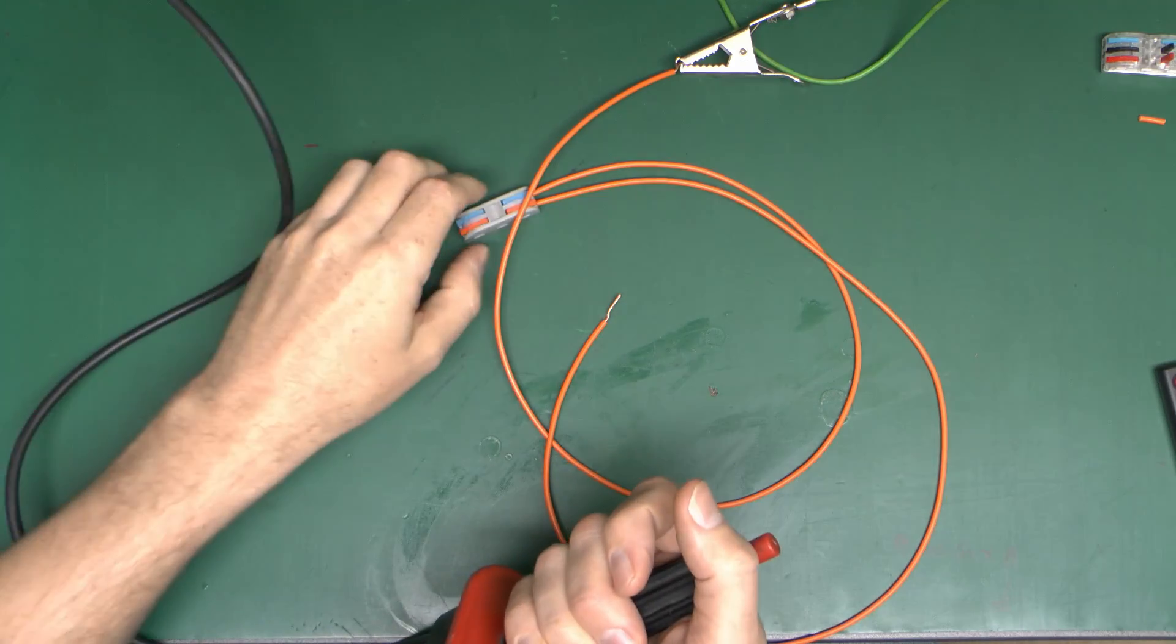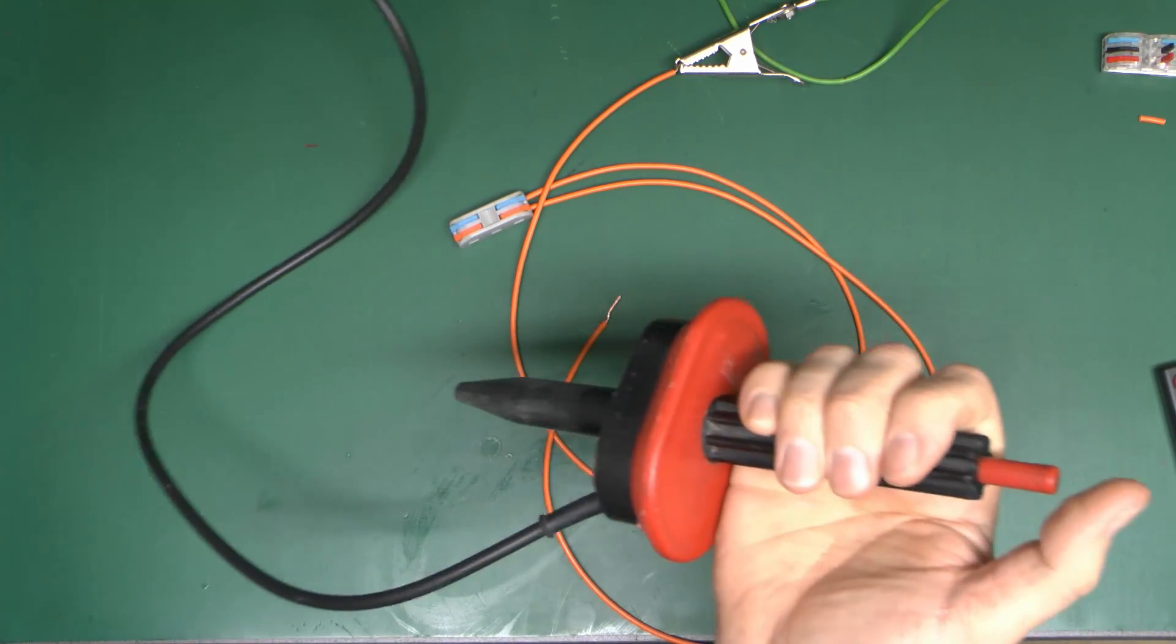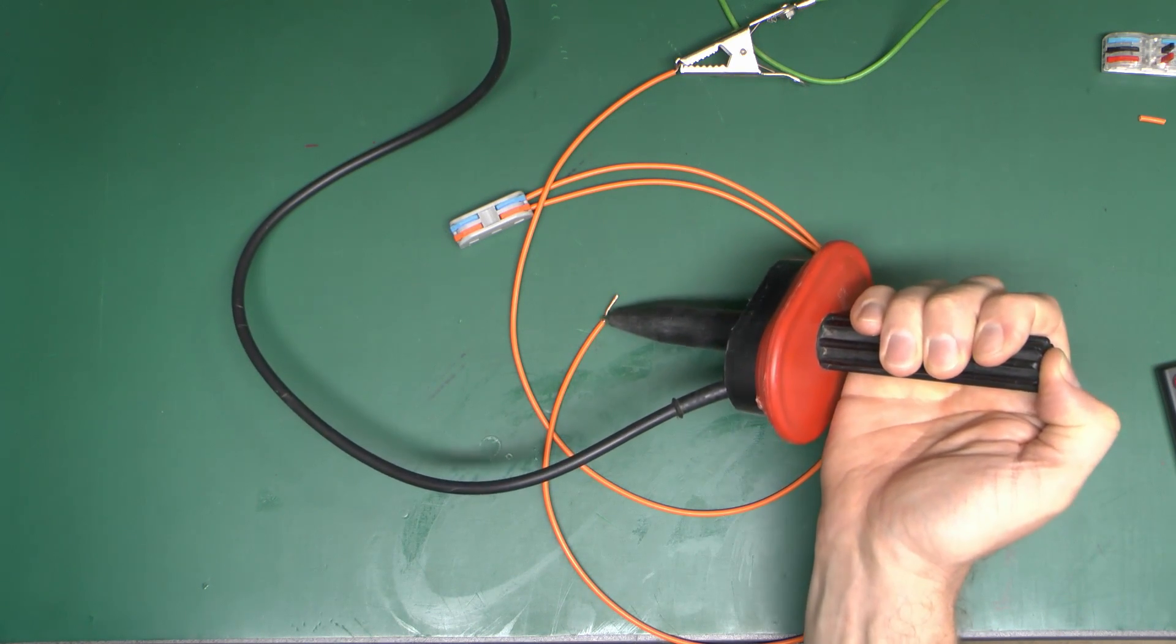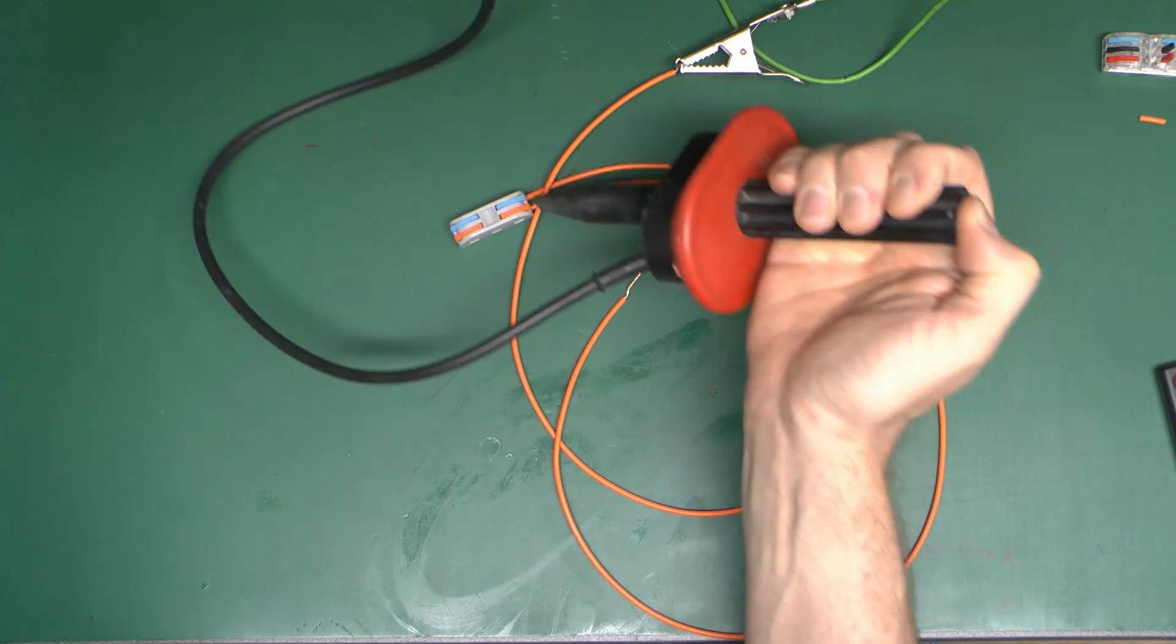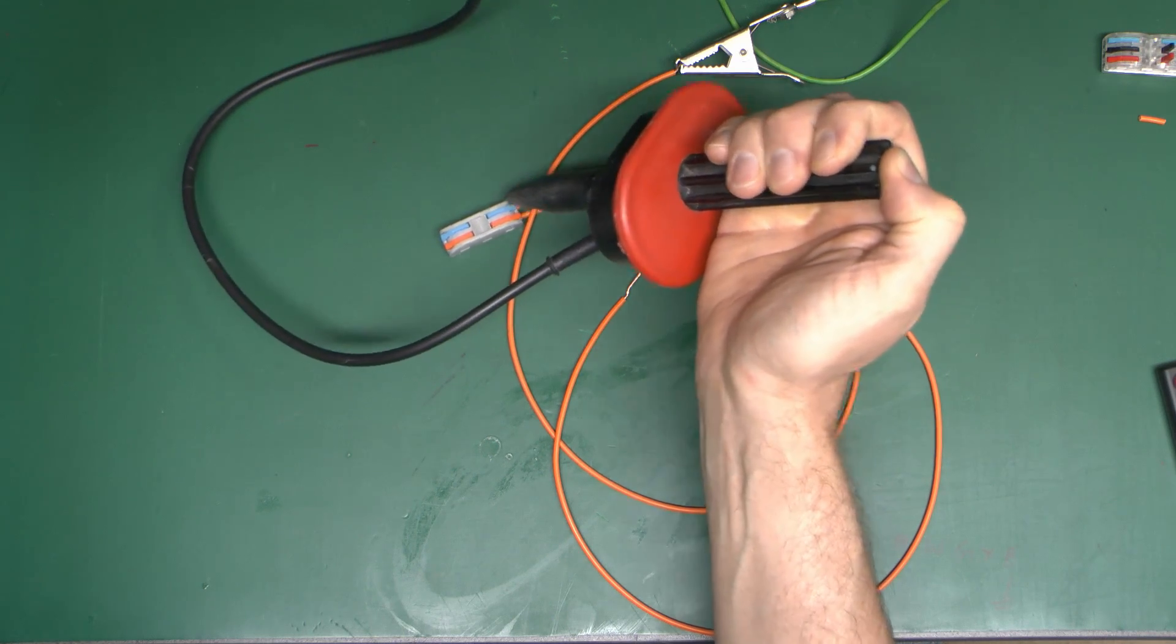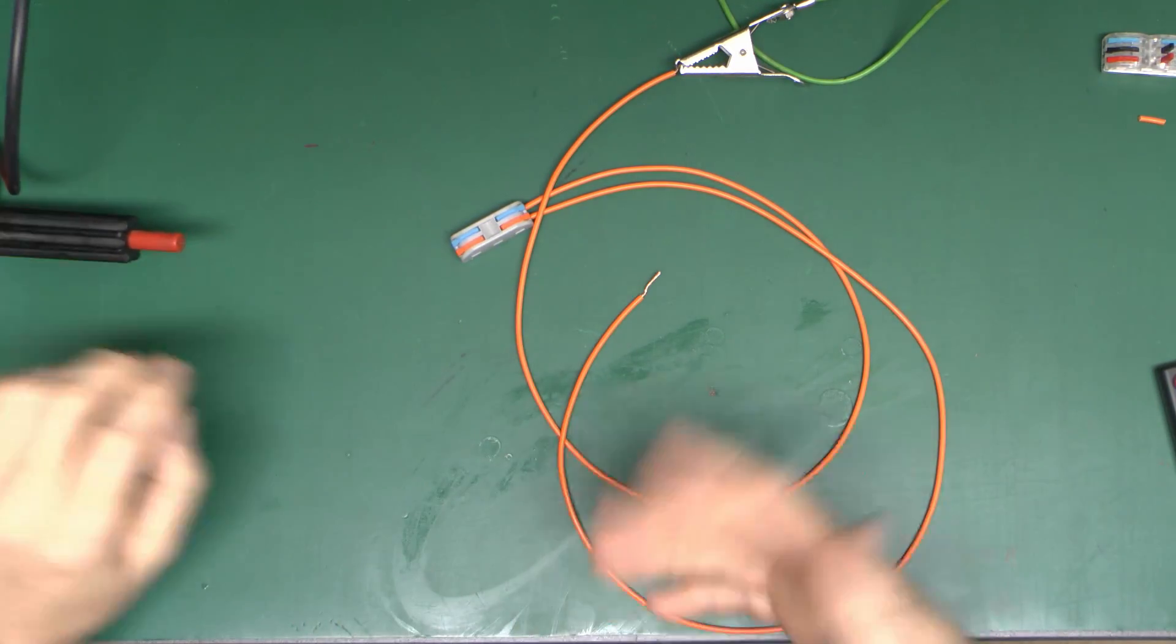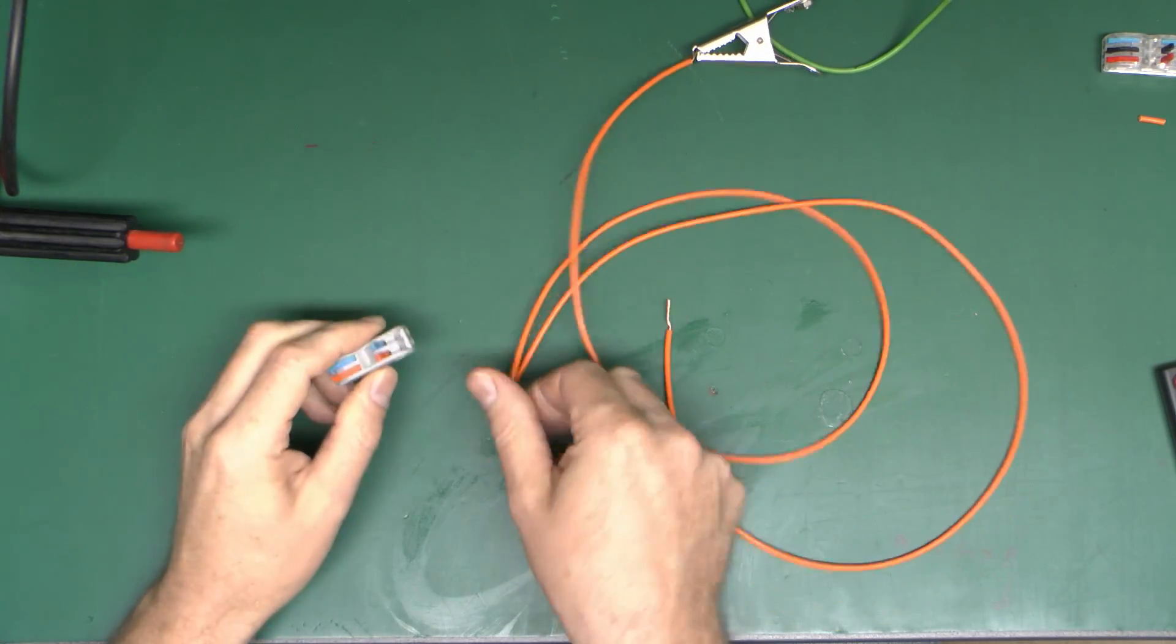And now we've got this two-way one, this is just orange and blue for whatever reason. And again we'll try that 3750. So again that's fine. So they do seem to actually pass the test there, even at that rather high voltage.